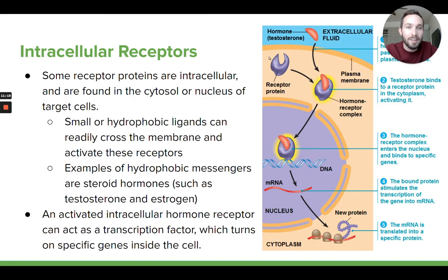Whatever effect this hormone is having on the cell, that's eventually what's going to happen. The key point here is that for intracellular receptors, their ligands are going to be non-polar. They would never have a polar or large ligand because it would have to easily go through the phospholipid bilayer. Steroids are good examples — those steroid hormones like testosterone and estrogens are lipids that are non-polar and do this in our cells. They have intracellular receptors.